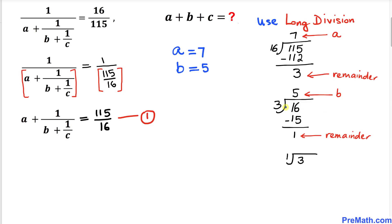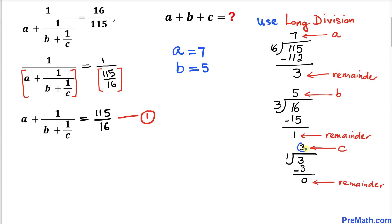Let's repeat this process one more time. This time the previous divisor becomes our dividend and the remainder 1 becomes our divisor. Performing the long division: 1 times 3 is 3. We subtract and get 0 as remainder. This quotient of 3 becomes our c value, and since the remainder is 0 we stop at this point. So our c value turns out to be 3.